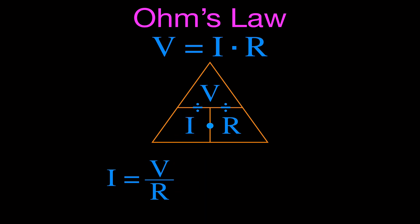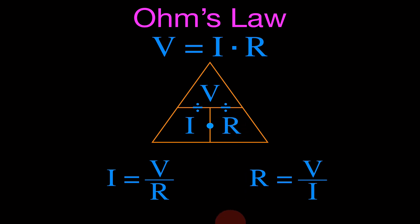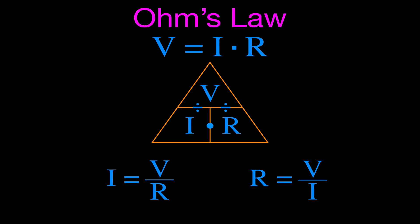We can do the same thing for the resistance. Cover up the R, and you're left with V over I — V divided by I — so the resistance is equal to the voltage divided by the current. And of course, you can confirm with the voltage: cover up the voltage and you see V equals I times R. There you have all three equations for Ohm's Law. You don't have to memorize the equations — all you have to do is use the Ohm's Law triangle.